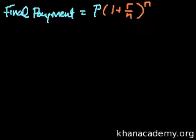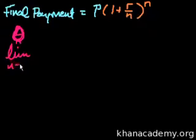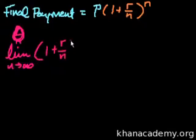The final payment equals P(1 + r/n)^n. Now if we take the limit as n approaches infinity, we use the limit concept. We take the limit as n goes to infinity of (1 + r/n)^n.